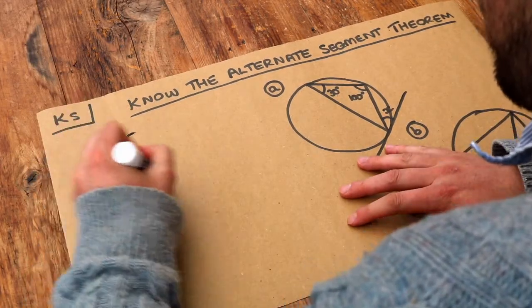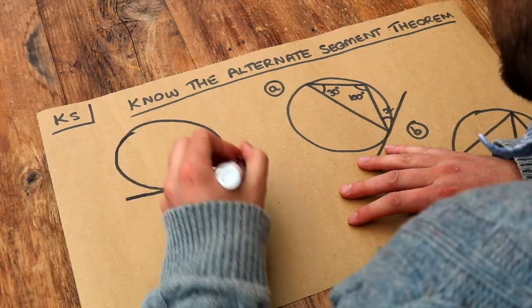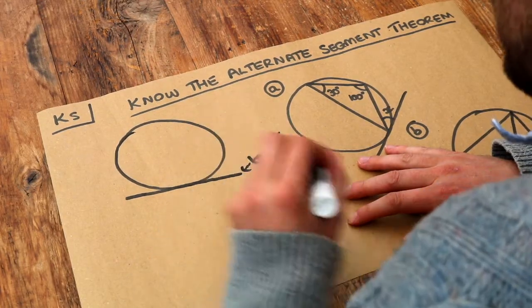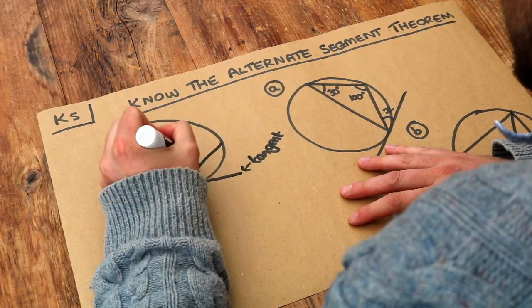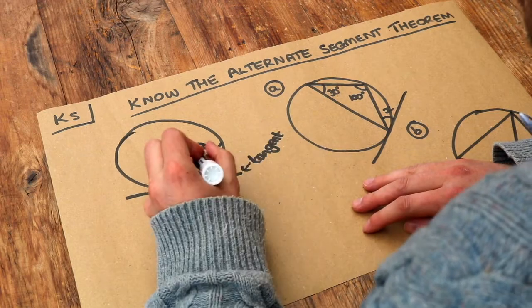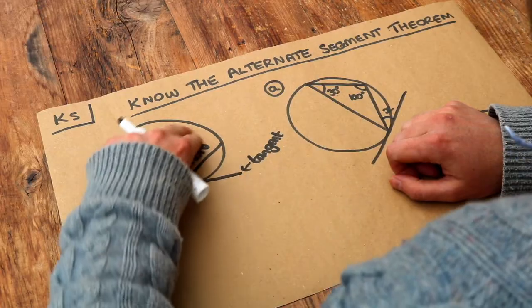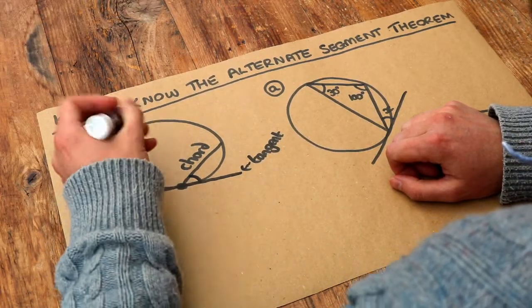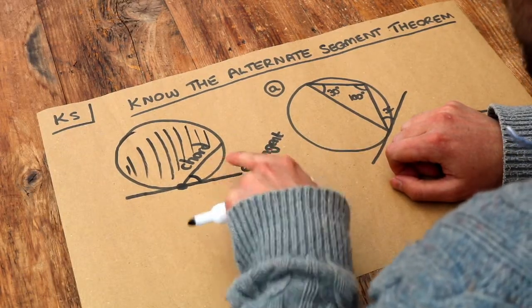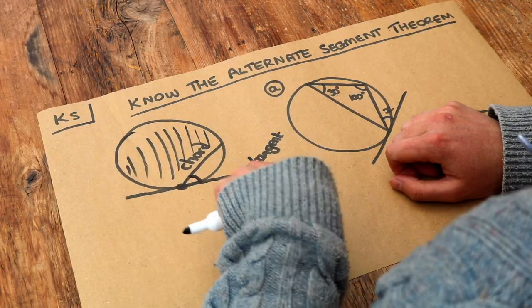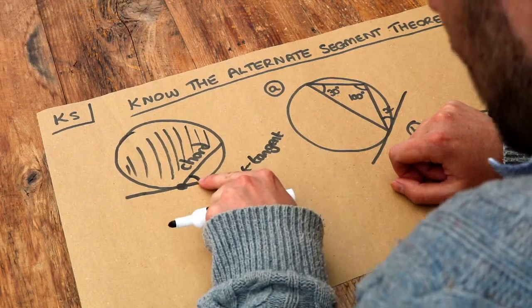Let's say you have a circle and we have a tangent to the circle. Remember a tangent is just a straight line that touches the circle, and at that point of contact we have a chord. We have an angle between this chord and the tangent. A segment is just the area between the chord and the circumference of the circle. We want the segment on the other side of the chord to the tangent.